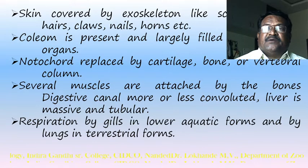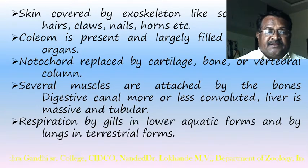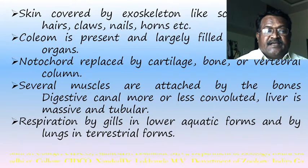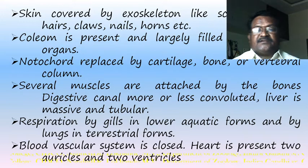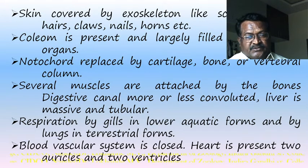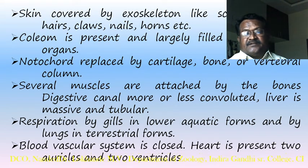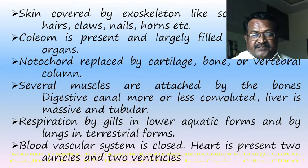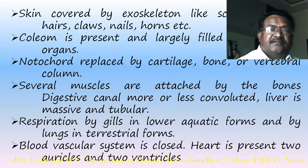Respiration occurs by gills in lower aquatic forms and by lungs in higher terrestrial forms. The blood vascular system is closed. The heart has two auricles and two ventricles in higher vertebrates — a four-chambered heart — while lower vertebrates may have a two-chambered heart with one auricle and one ventricle.